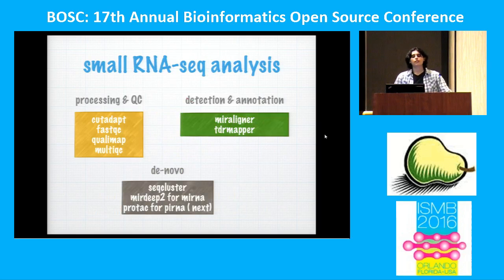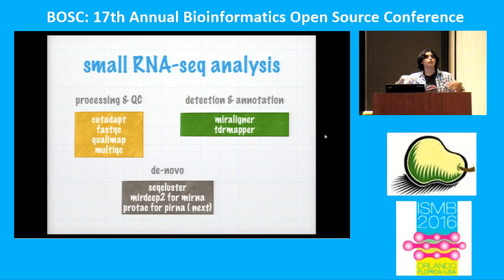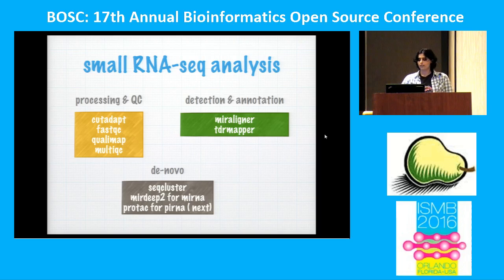There are three main steps in the analysis. The first is processing of sequences and quality control metrics — I use cutadapt for trimming and FastQC, and MultiQC for reporting. The second is detection and annotation of known small RNAs — I use miRaligner and tDRmapper for microRNA and tRNA. The third is novel or general characterization — I use seqcluster and miRDeep2 for microRNA. I would also like to add piRNA detection.